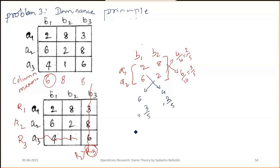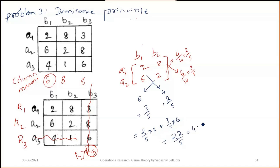Once we have the probabilities, we calculate the value of the game. Multiply p1 and p2 with the first column: (2/5)×2 + (3/5)×6 = 4/5 + 18/5 = 22/5 = 4.4. Since the minimax and maximin values were 1 and 6, and 4.4 lies between 1 and 6, this confirms the answer.